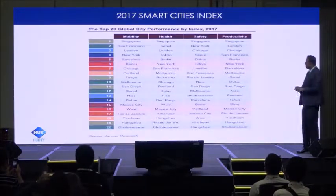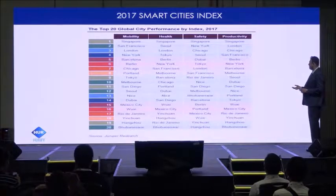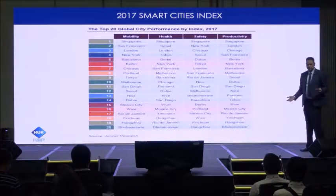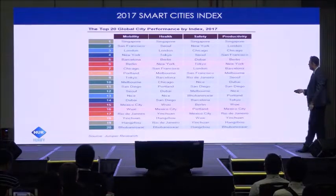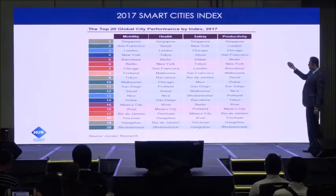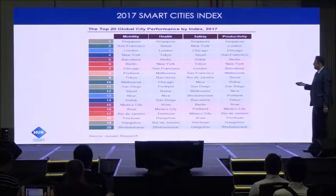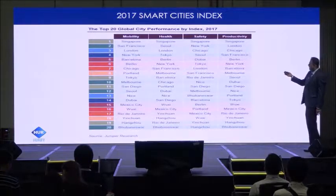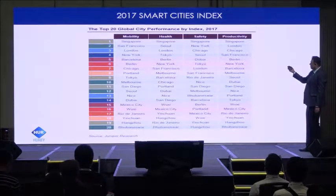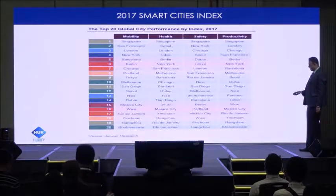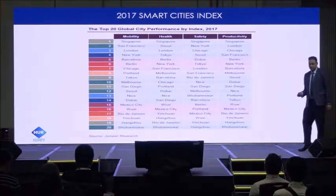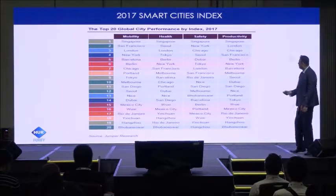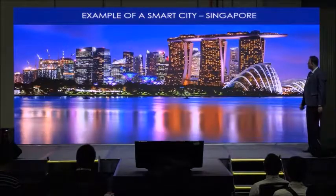Looking at the 2017 Smart Cities Index, we have Singapore at the number one spot. Well done, Singapore. This is a list of smart cities indexed by mobility, health, safety, and productivity — about 20 items. There's a city from India called Bhubaneswar, which is a good thing, because I am from India.